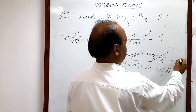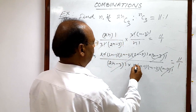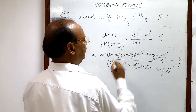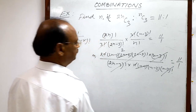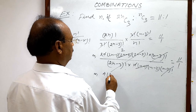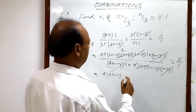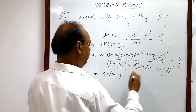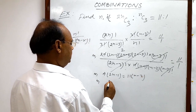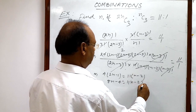The n minus 3 whole factorial will be cancelled out, and this is cut to 11 by 1. N will be cancelled from here, and 2n minus 2 will be cancelled with n minus 1, leaving 2. So we get 4 into 2n minus 1, and by cross multiplication we multiply n minus 2 with 11, giving us 8n minus 4 is equal to 11n minus 22.